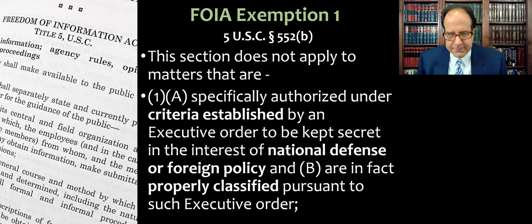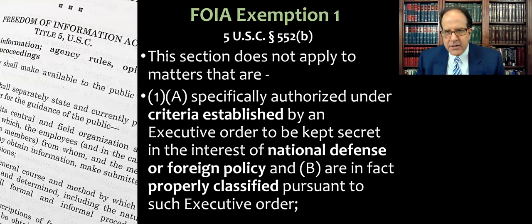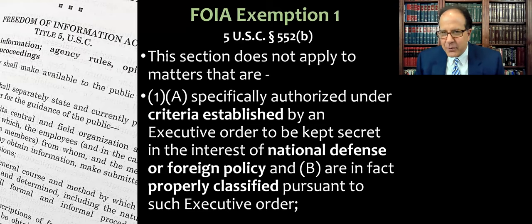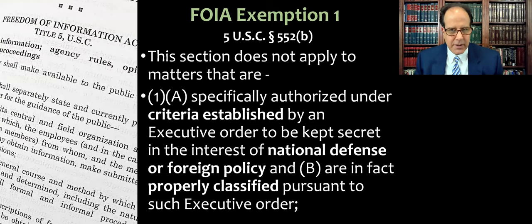Let's go into FOIA exemption one, and this has A and B parts. We're located here in 5 U.S.C. section 552(b). For my students, remember APA 553 is where we get into notice and comment rulemaking. All of FOIA is basically embedded in the section right before that, 552.